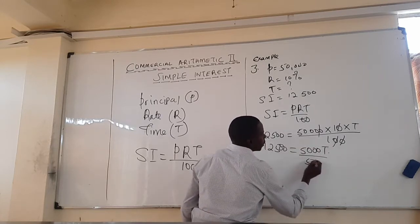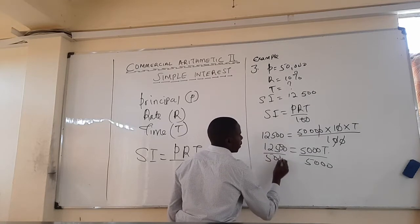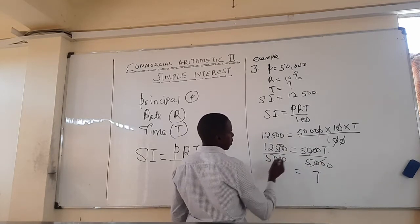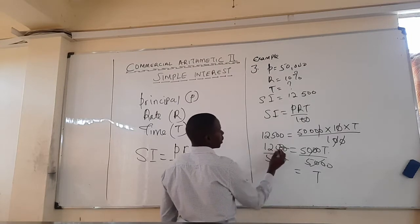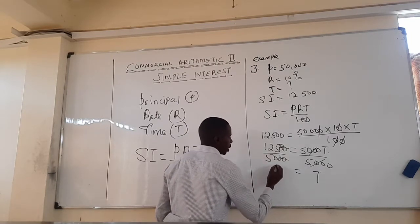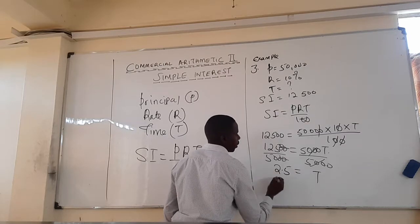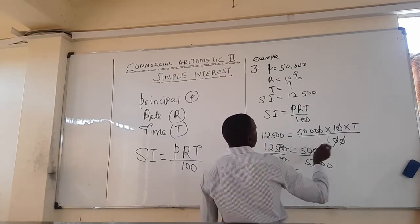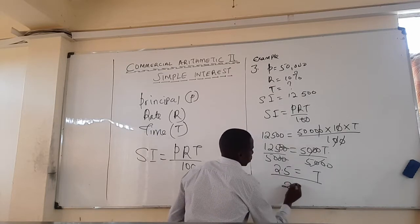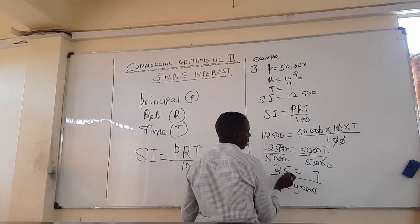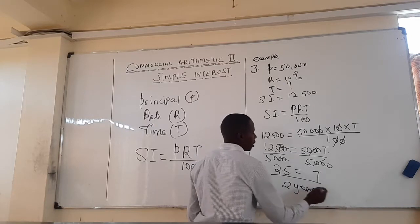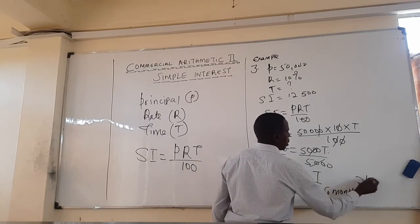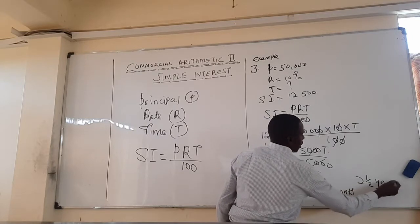Dividing both sides by 5,000, we get T equals 12,500 divided by 5,000, which is 2.5. So our time is 2 years and 0.5 of a year — that is 6 months — or simply 2 and a half years.